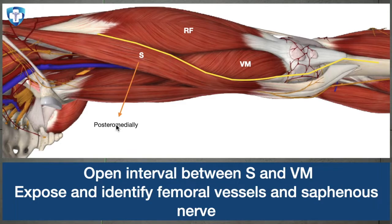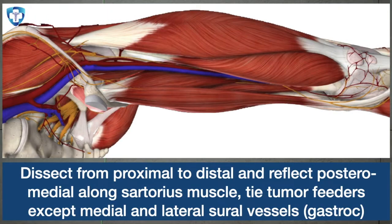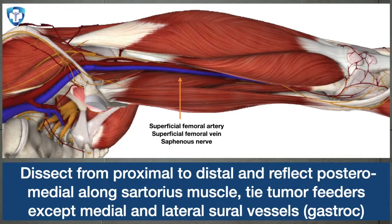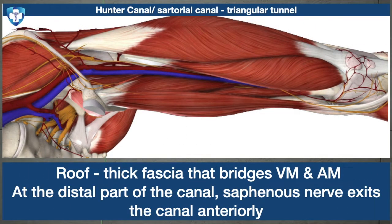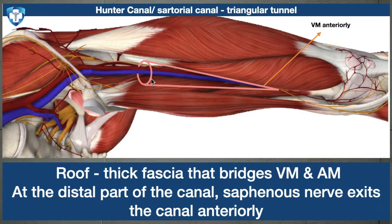We identify the vessels and start dissecting from proximal to distal. We coagulate or ligate the tumor feeders and protect the sural vessels. These are the superficial femoral vessels and the saphenous nerve. As we retract the vastus medialis anteriorly, we can see a triangular funnel — the vessels enter this funnel, passing posterior to the vastus medialis into the adductor canal. This tunnel is called the Hunter canal or the sartorial canal.